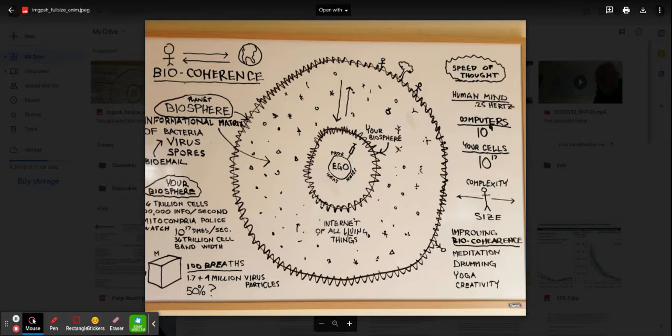That's trillion cell bandwidth. 10 to the 17th? That's a lot of information packed in there. How does it get there? How did all those bacteria, spores, and virus messages get into you?